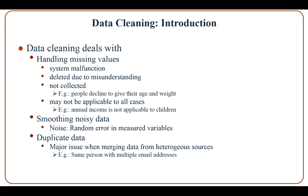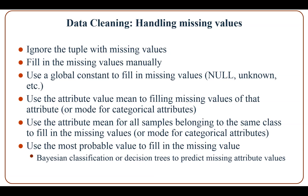Data Cleaning also deals with smoothing noisy data and duplicate data, which is a major issue when merging data from heterogeneous sources — for example, the same person may have multiple email addresses. Missing values can be handled by ignoring the whole record, filling in manually, using a global constant like null or unknown, using the attribute mean or mode for categorical attributes, using the attribute mean for all samples belonging to the same class, or using the most probable value — in which case regression, classification, or decision trees can be used to predict the missing values.